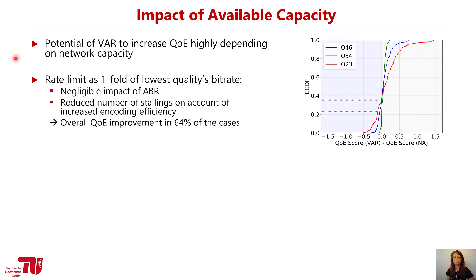The potential of the variable approach to improve QoE is highly dependent on network capacity. In the scenario where the rate limit is set to one times the lowest quality bitrate, the impact of the ABR is negligible since there is hardly a chance to switch to a higher quality. In this scenario, the overall QoE (blue line) can be improved in 64% of cases. Notably, our improvements are of greater extent than the impairments: while the stalling QoE is decreased by a maximum of 0.5, the maximum improvement achievable is almost 1.5.